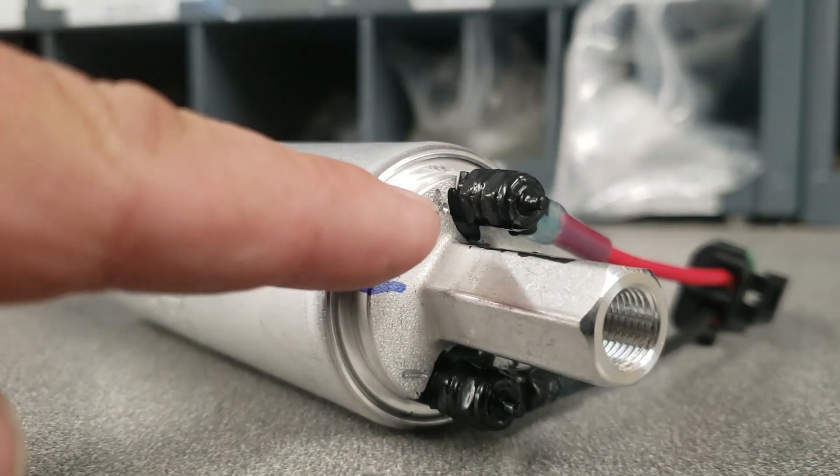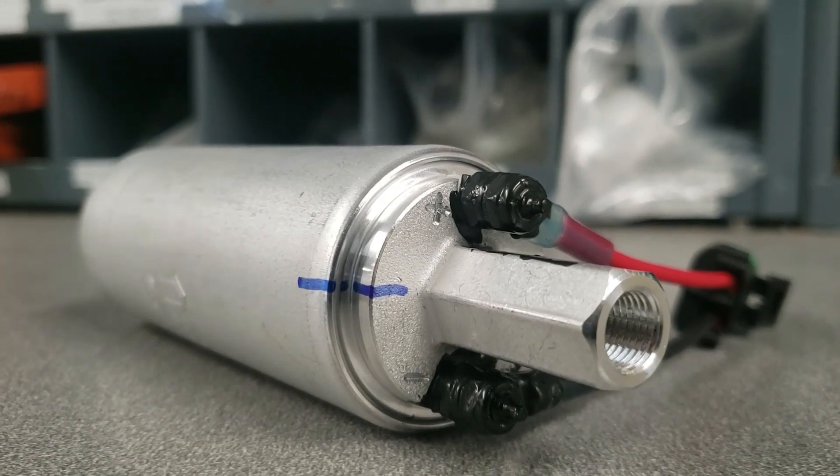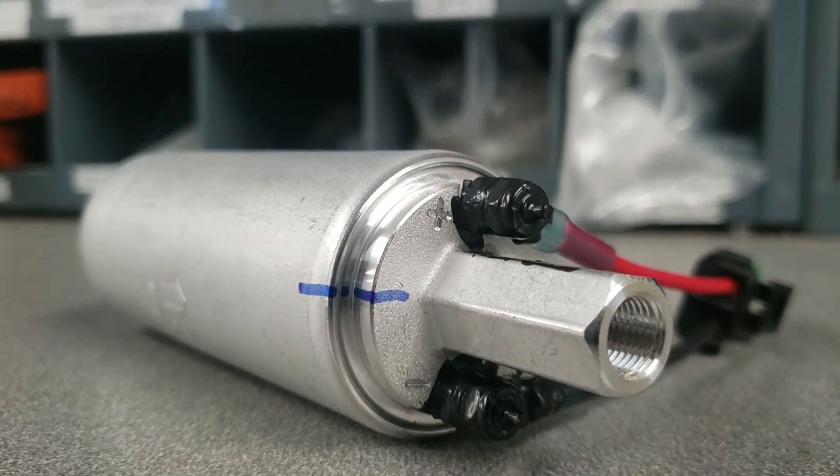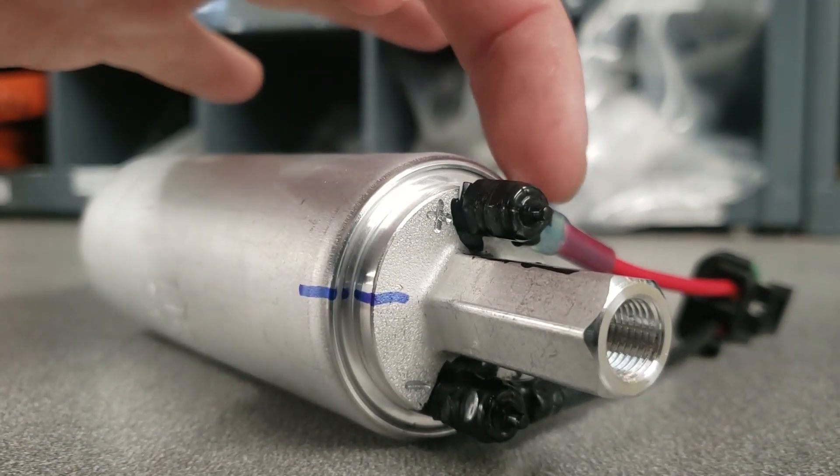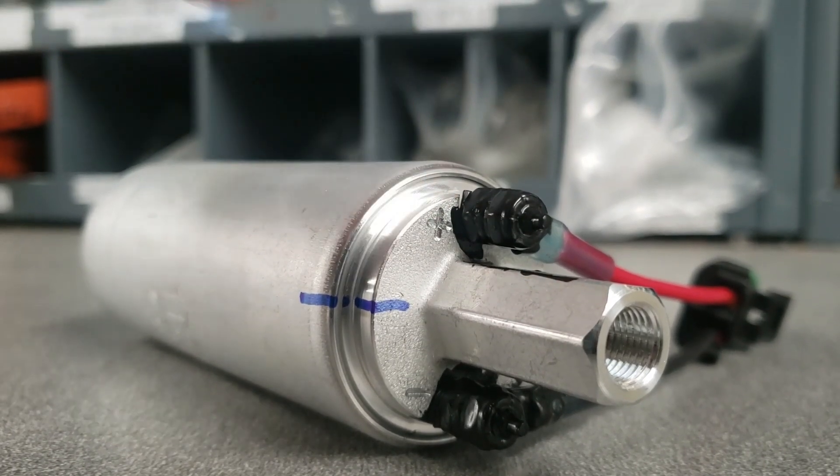The second thing is you'll notice that there's positive and negative symbols that are engraved into the pump body itself. That indicates where the red wire and the black wire goes on the pump. We always put the ring terminals on this side so that you can see where the symbol is on this side here.